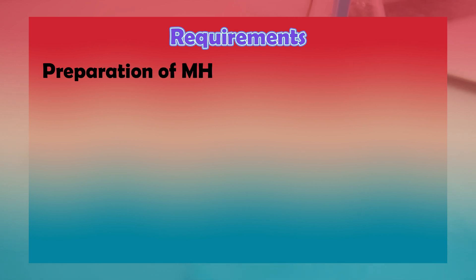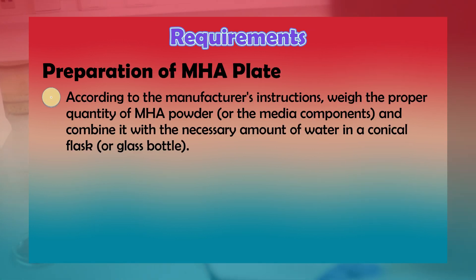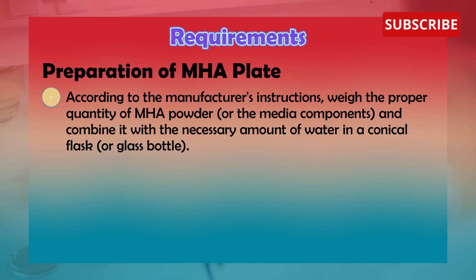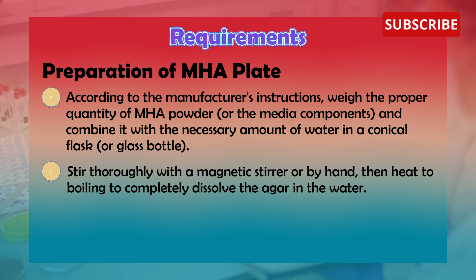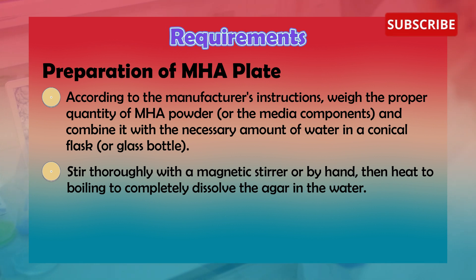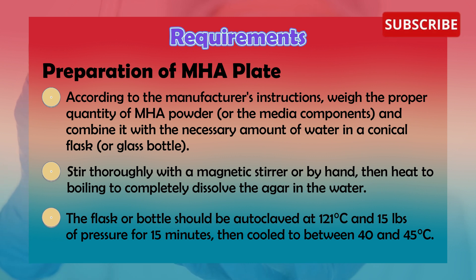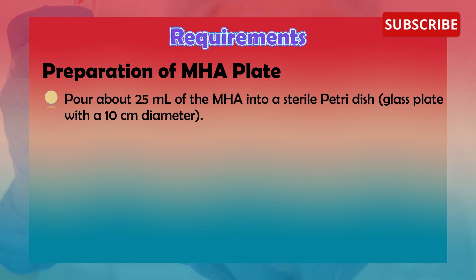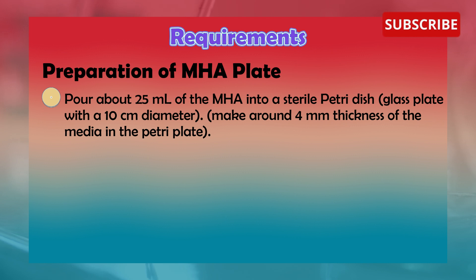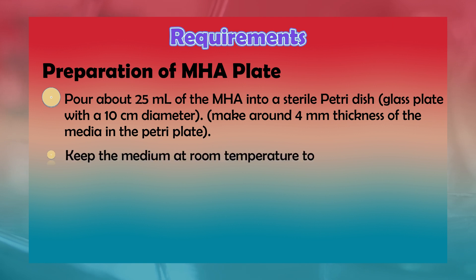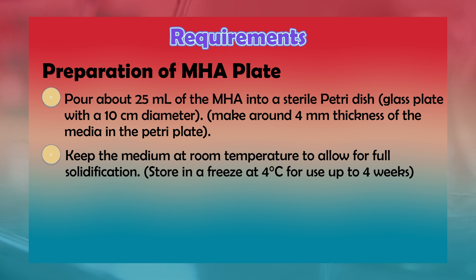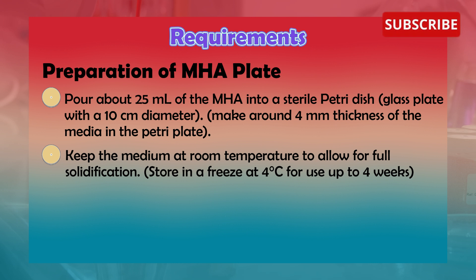For preparation of the MHA plate, weigh the proper quantity of MHA powder or media components and combine with the necessary amount of water in a conical flask or glass bottle. Stir thoroughly with a magnetic stirrer or by hand, then heat to boiling to completely dissolve the agar. Autoclave the flask or bottle at 121°C and 15 pounds of pressure for 15 minutes, then cool to between 40–45°C. Pour about 25 ml of the MHA into a sterile petri dish with a 10 cm diameter, making around 4 mm thickness of media. Keep at room temperature to allow for full solidification, then store at 4°C for up to four weeks.